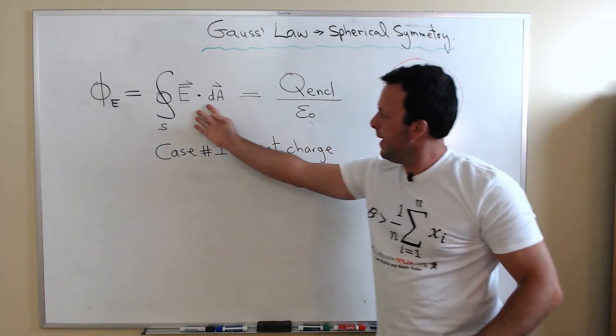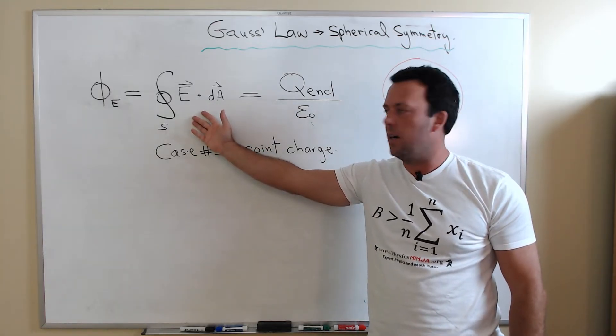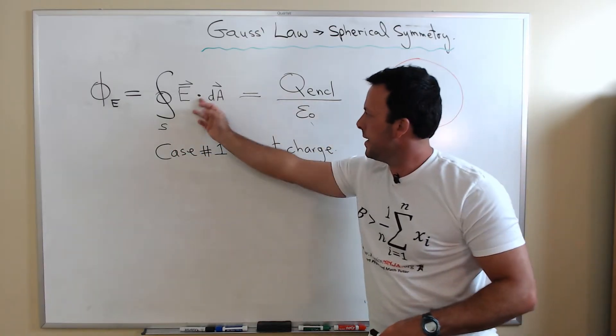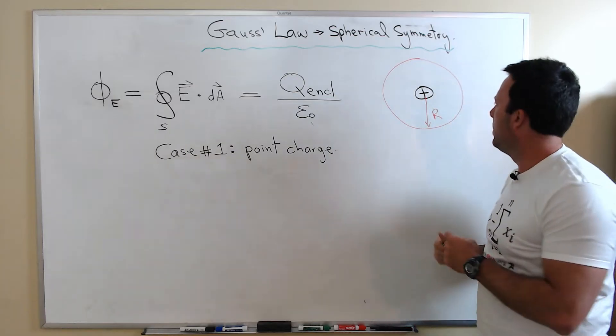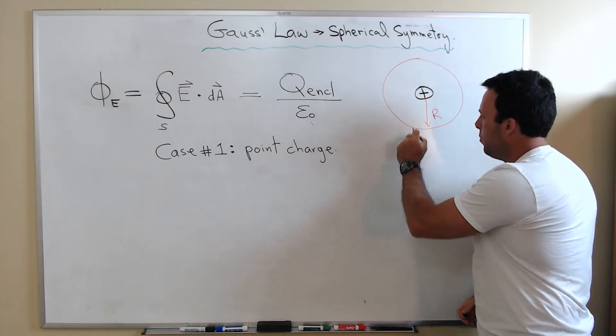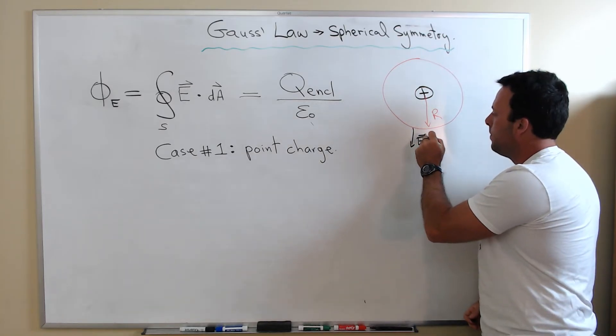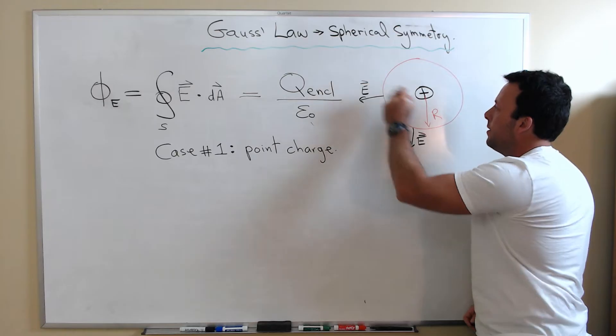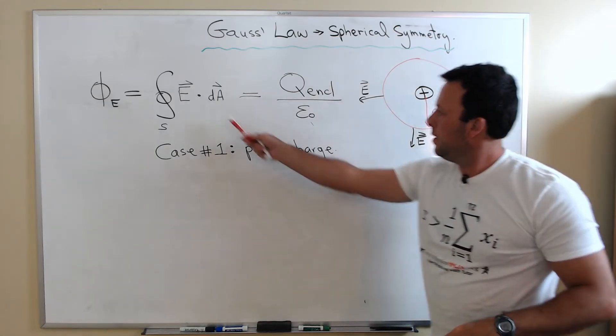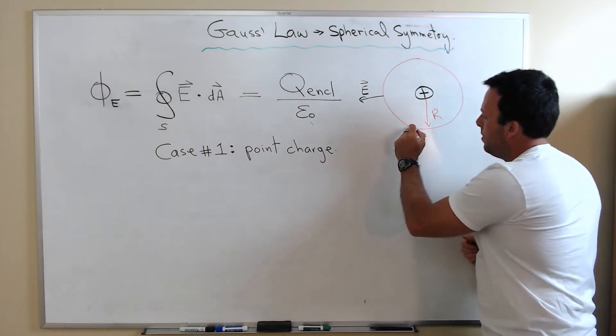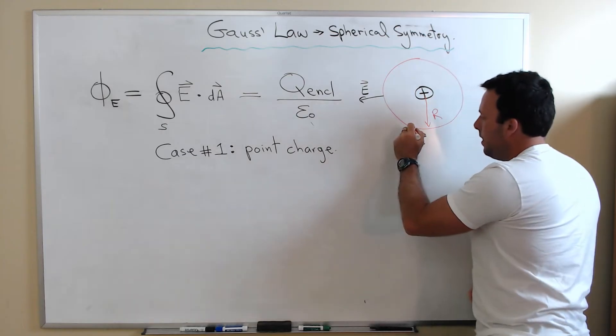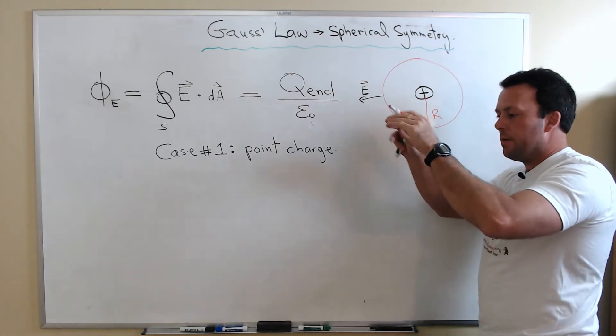So this integral over that surface of the electric field with a scalar product of the area - we can actually know what the electric field of a point charge is, but more importantly we know the direction. The direction is really radially outward from the positive charge. The vector, or the small vector denoting that infinitesimal area, that also points radially out from my surface.